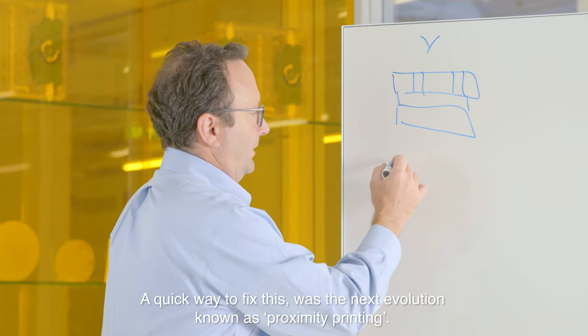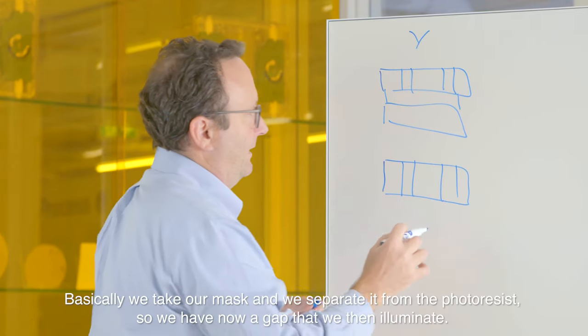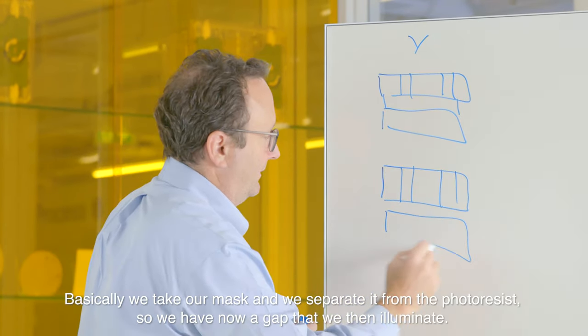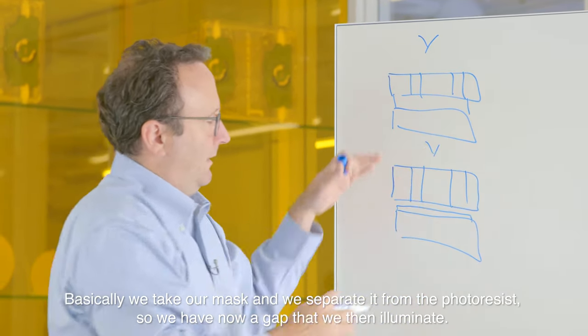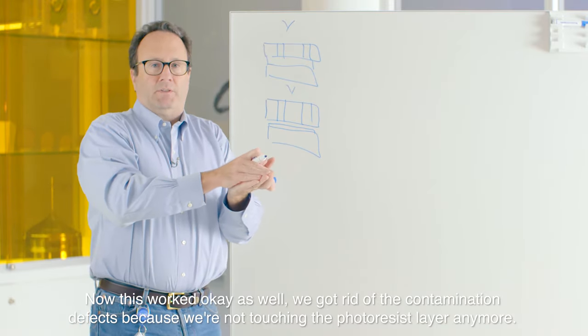A quick way to fix this was the next evolution known as proximity printing. Basically, we take our mask and separate it from the photoresist. So we now have a gap that we then illuminate. This worked okay as well. We got rid of the contamination defects because we're not touching the photoresist layer anymore.